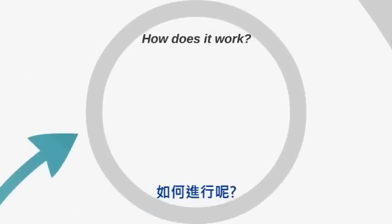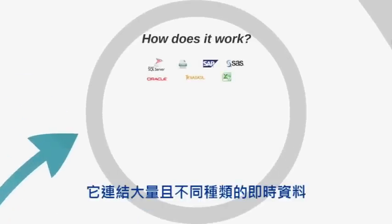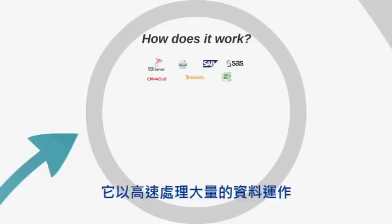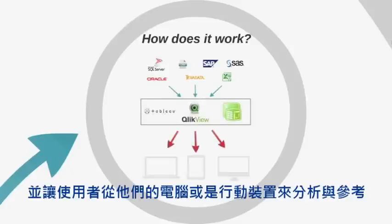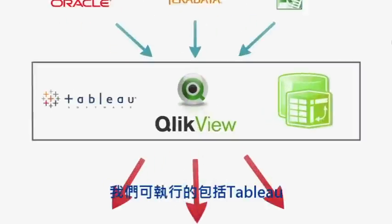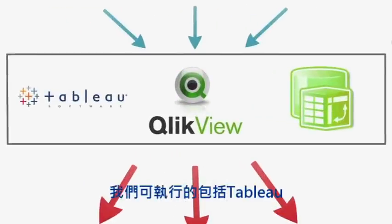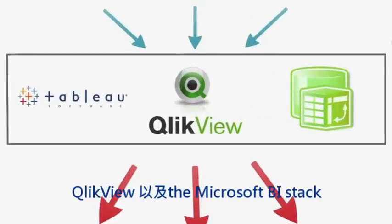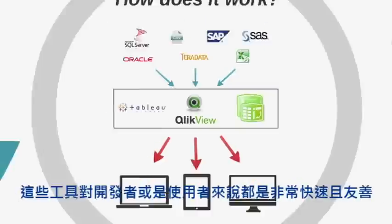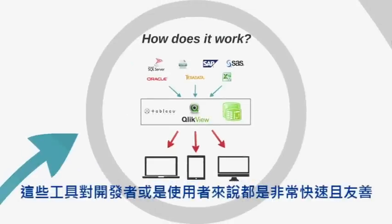How does it work? It links together a huge range of data sources in real time. It processes vast amounts of data at rapid speed and empowers one or thousands of users to analyze and collaborate on their desktop or mobile devices. Our enablers currently include Tableau, ClickView, and the Microsoft BI Stack. These tools are fast and friendly for developers and for users.